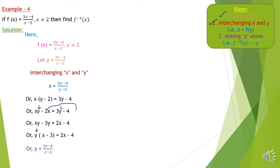As required, y is alone with coefficient positive 1, so this is our inverse: f⁻¹(x) = (2x−4)/(x−3). It's simple — if there are two y's on different sides, bring them to one side, take common, get a single y, and make it alone easily. You can pause the video, note it down, and we move to the next slide.